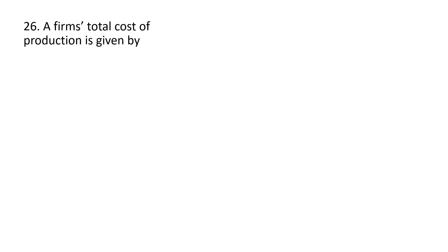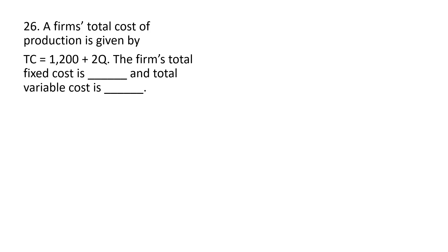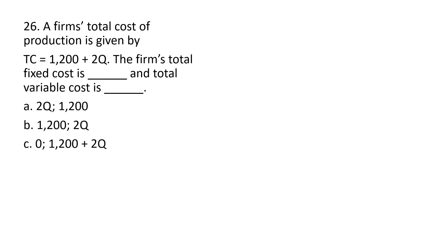Question 26: a firm's total cost of production is given by the following equation. The firm's total fixed cost is blank and total variable cost is blank. Answer choice B is correct: the total fixed cost is the constant, $1,200, and the total variable cost is the 2Q term.